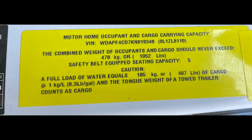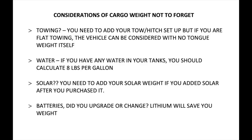So if you subtract the two — 11,030 minus that 9,000 and change — we have an OCCC of 1,052 pounds that we can add to this motorhome. Things to consider for cargo weight, and don't forget if you're towing, you need to add your tow and hitch setup. But if you are flat towing, you don't have to add the vehicle tongue weight because it virtually provides no tongue weight when flat towing. Water — if you have any water in your tanks, you should calculate 8 pounds per gallon.